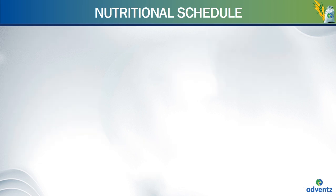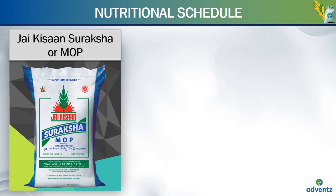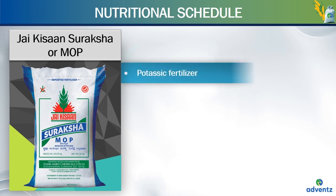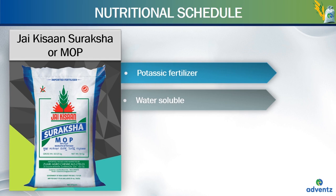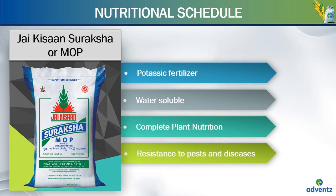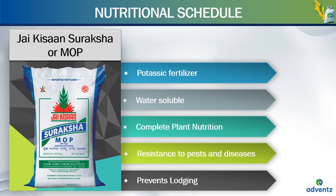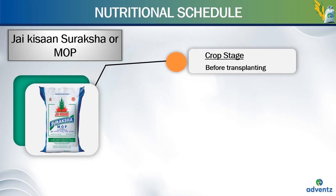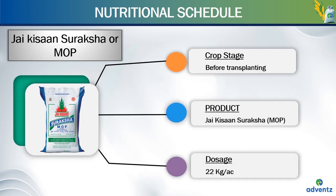Jai Kisan Suraksha, also called Jai Kisan Mangala MOP, is an imported and most popular potassium fertilizer. Suraksha is totally water-soluble and is readily available for crops. It helps in complete plant nutrition and is high in potassium content, therefore helping in building resistance to pests and diseases. It also helps in preventing lodging of the crop. Suraksha is available in 50 kg bags. The crop stage of Suraksha is before transplanting and the applied dosage is 22 kgs per acre.